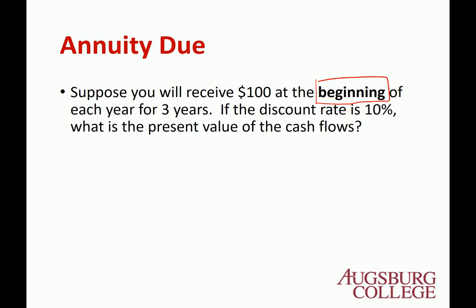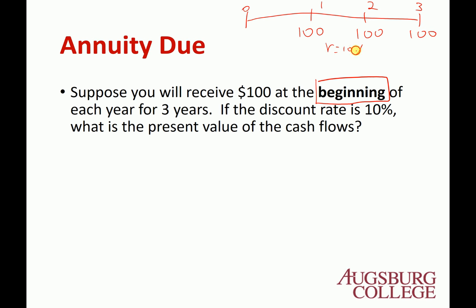If you have a three-year cash flow — the previous example — $100, $100, $100, and an interest rate of 10%, that's basically the Ordinary Annuity.